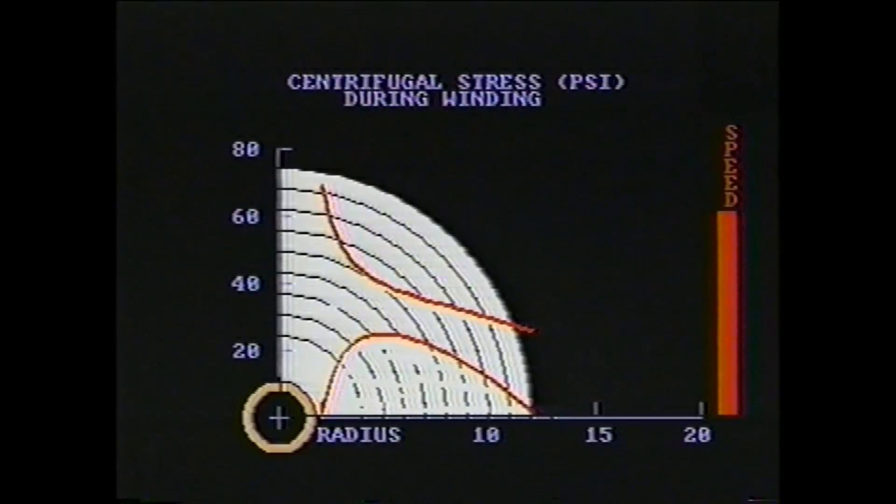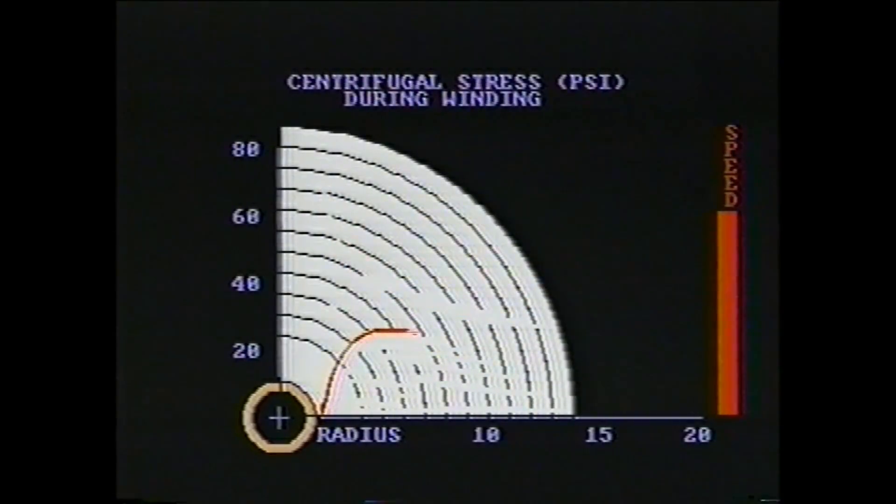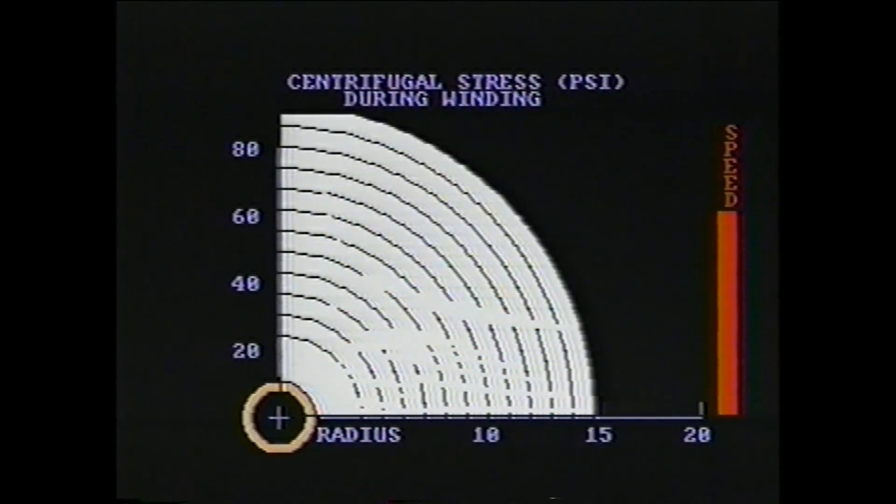To the right is a speed bar to show the typical acceleration, run and deceleration cycle of the winder. Centrifugal stresses are somewhat smaller than the roll structure induced stresses. However, they are not negligible. At high speeds, the roll structure induced compressive radial pressure is reduced by the centrifugal stresses.